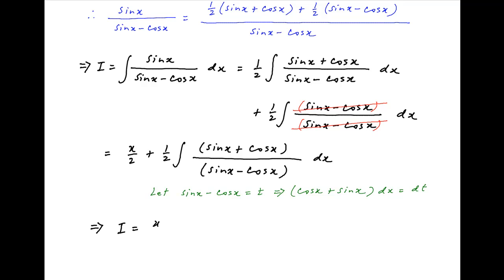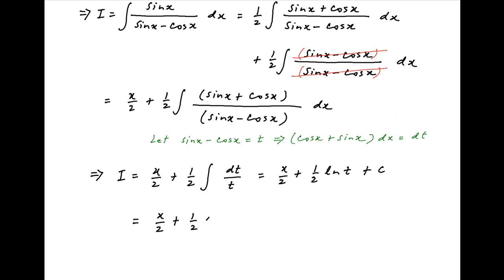Substituting, the value of I equals x upon 2 plus one-half of the integral of dt upon t, which equals x upon 2 plus one-half of ln(t) plus the constant of integration. Substituting back the value of t, I equals x upon 2 plus one-half of ln|sinx minus cosx| plus the constant of integration, which is the required answer.